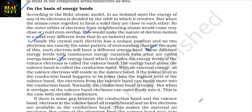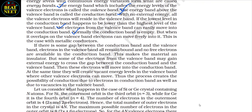Inside the crystal, each electron has a unique position and no two electrons see exactly the same pattern of surrounding charges. Because of this, each electron will have a different energy level. These different energy levels with continuous energy variations form what are called energy bands. The energy band which includes the energy levels of the valence electrons is called the valence band. The energy band above the valence band is called the conduction band. With no external energy, all valence electrons reside in the valence band. When the conduction band overlaps the valence band, electrons can move freely into it — this is the case with metallic conductors.